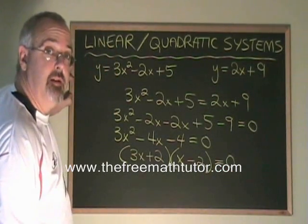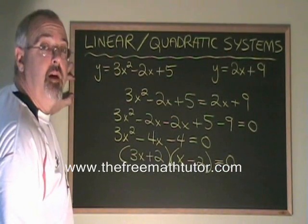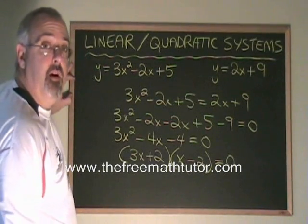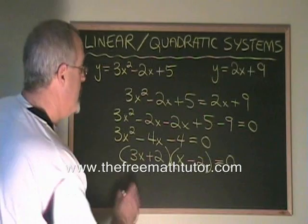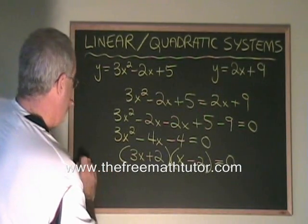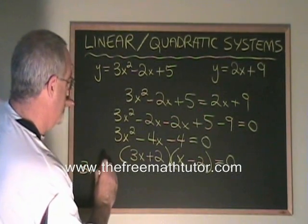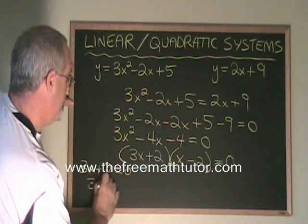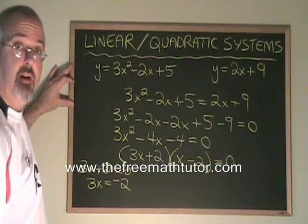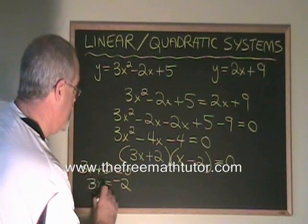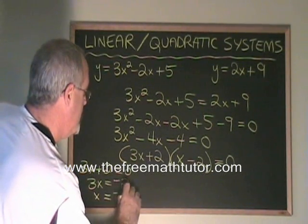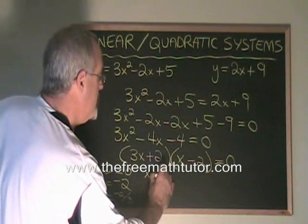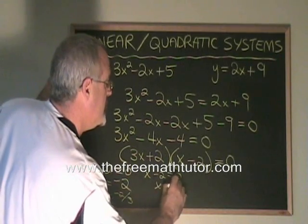So I make that system equal to 0. Now, I have to make each of these binomials equal to 0 to find out what the points of intersection are. 3x plus 2 equals 0 simplifies to give us 3x equals negative 2. x is therefore equal to negative 2 thirds. x minus 2 equals 0 simplifies to x equals 2.